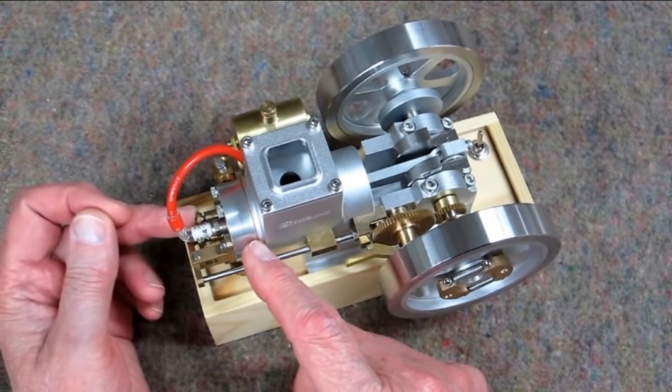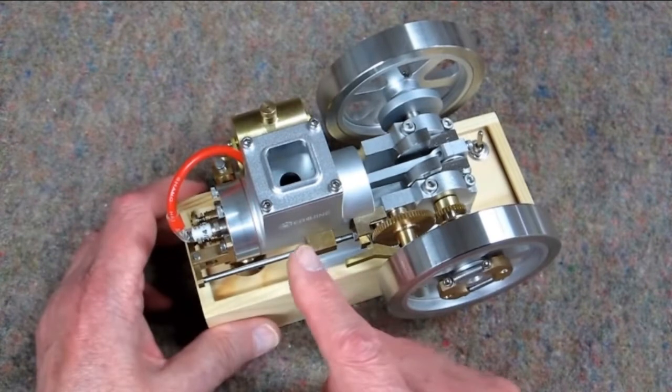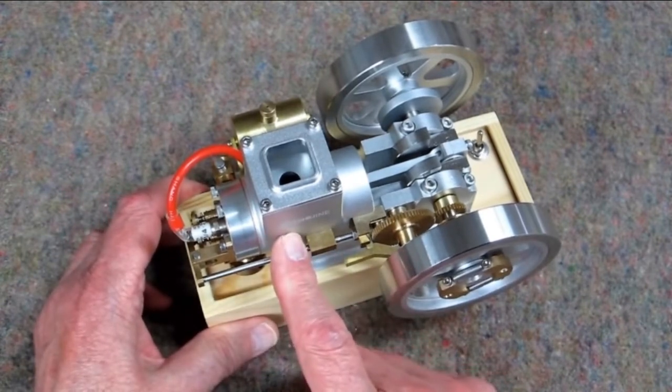which opens the poppet valve in the head. That allows air to go through the carburetor and mix with fuel, so you then have an air fuel mixture on top of the piston.